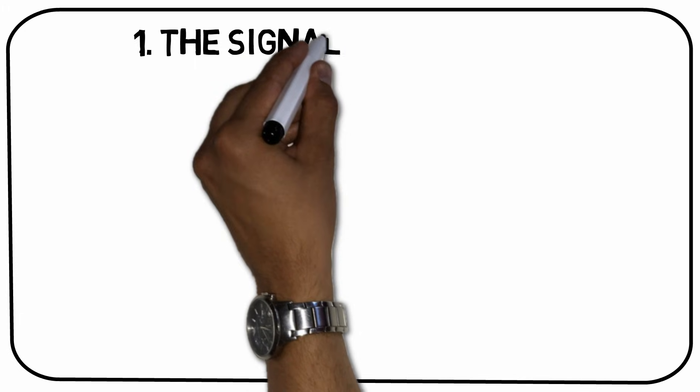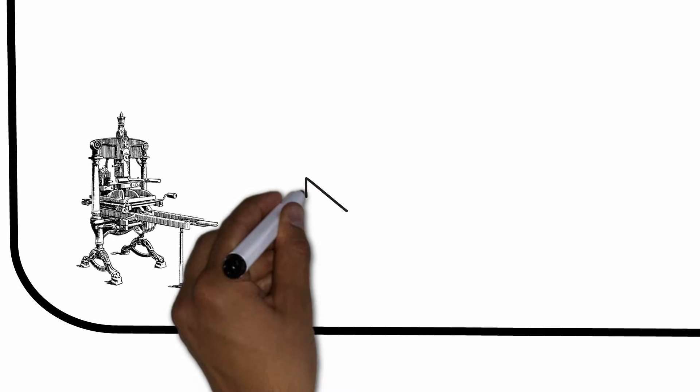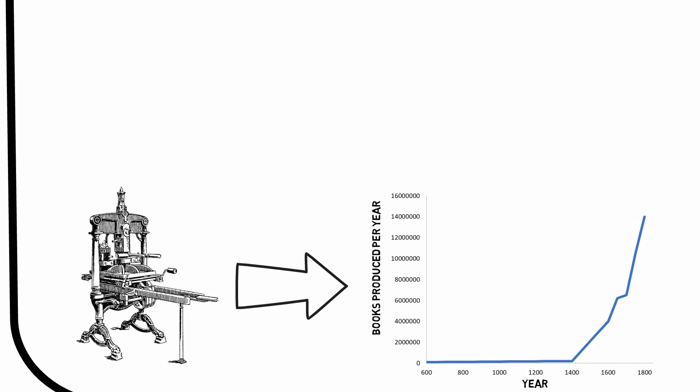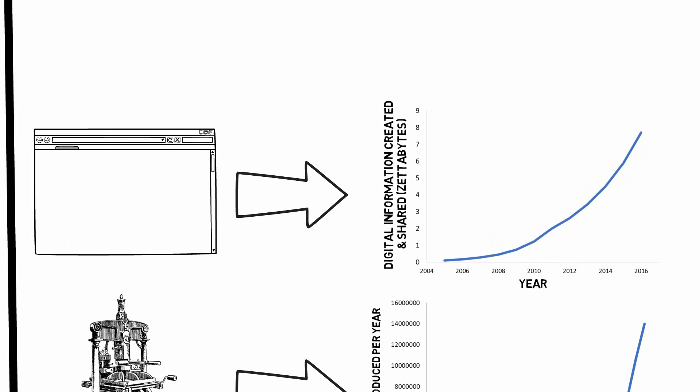Takeaway number 1: The Signal and the Noise. Ever since the creation of the printing press in 1439, the amount of information that can be stored and reused later has exploded. And this has only been enhanced even further with the spread of the internet. Information created and shared seems to grow at an exponential pace.